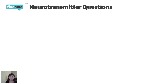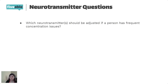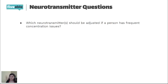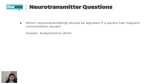Which neurotransmitter should be adjusted if a person has frequent concentration issues? This might be a hard question if you haven't been introduced to neurotransmitters before, but the answer is ACH, because it affects concentration, muscle memory, and all of that. That would fall into ADHD.